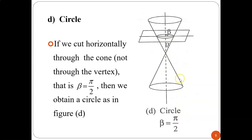For a circle, when you cut a cone at pi over 2 — meaning at a flat 180-degree angle — you get a circle (bulatan). That completes the introduction. There are four conic sections: circle, parabola, ellipse, and hyperbola.